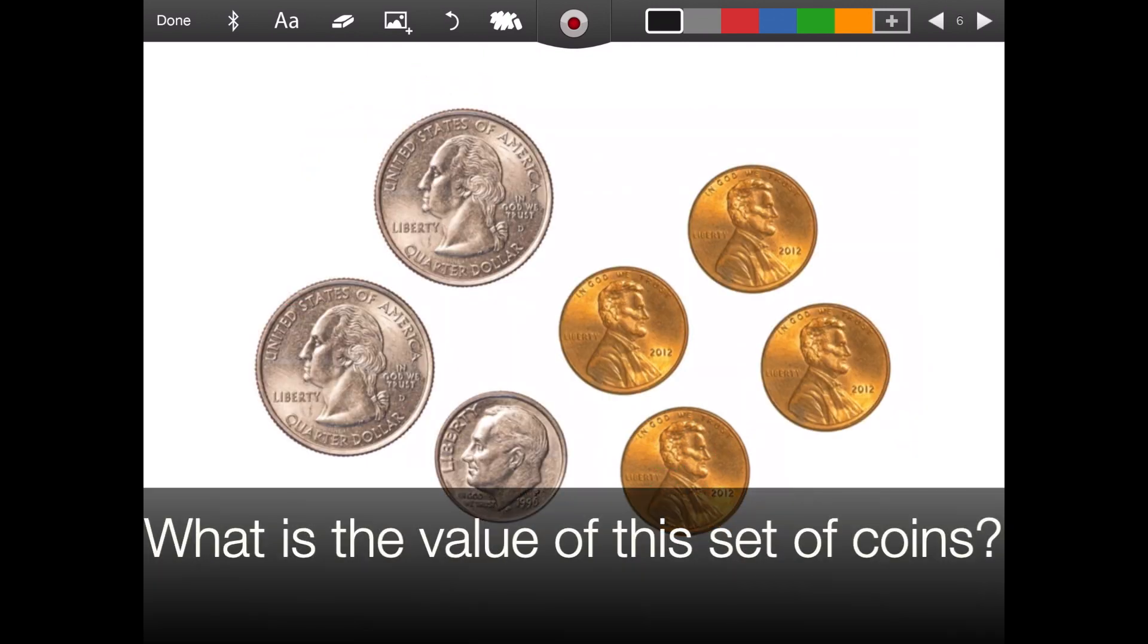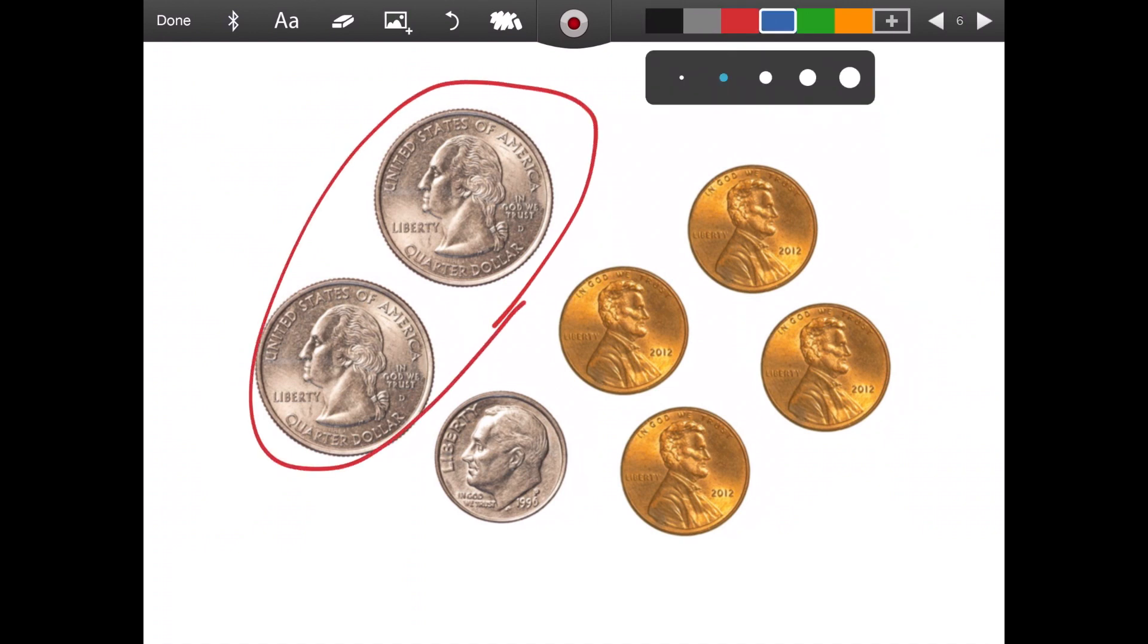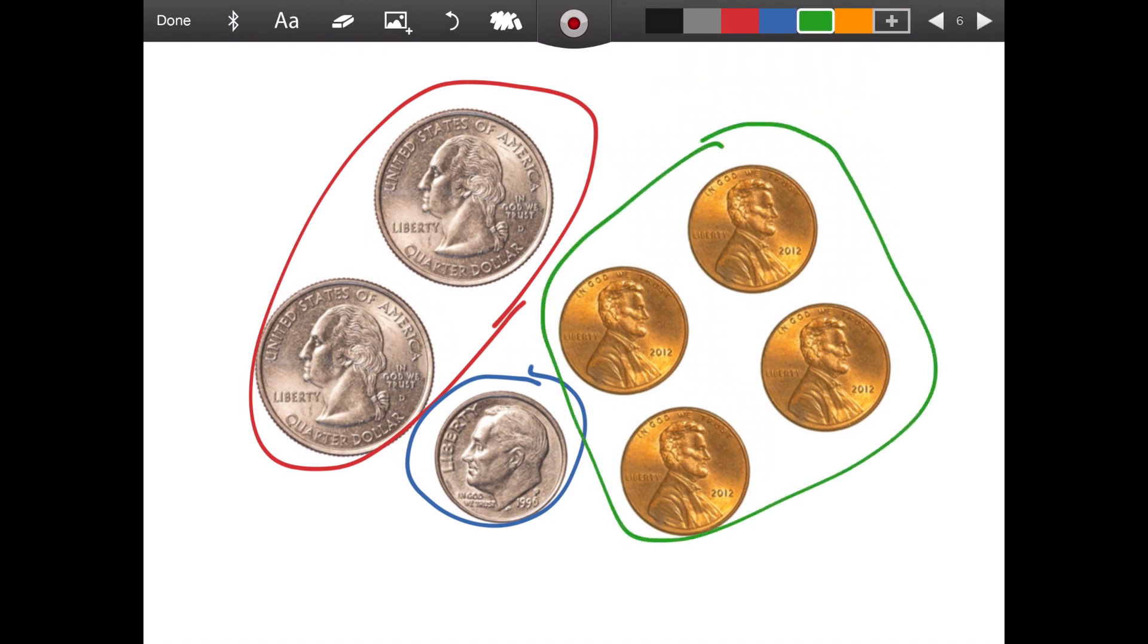Here's another one. I'm going to give you a minute to think about this one. If I again separate them by value, here I have quarters, here I have a dime, and over here are my pennies. I want to start with that greater value first, which is the quarters. The quarters are 25 cents. So I have 25 and another 25 equals 50. And if I add my dime, I now have 60. Adding the pennies, 61, 62, 63, and 64, being a total of 64 cents.